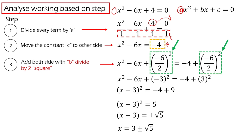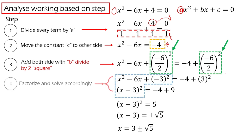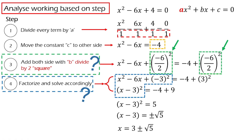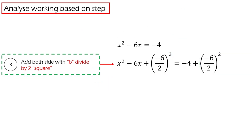The third step is we add both sides with (B divided by 2) squared. Finally, we factorize and solve accordingly. I understand there will be a lot of questions and confusion on steps 3 and 4. Don't worry, we will discuss them in detail. Let's start discussing step 3: how do we add both sides with (B divided by 2) squared.